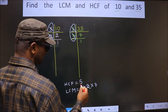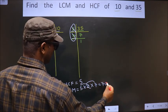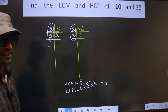That is 5 into 2, equals 10. 10 into 7, equals 70. So this is our LCM and this is our HCF.